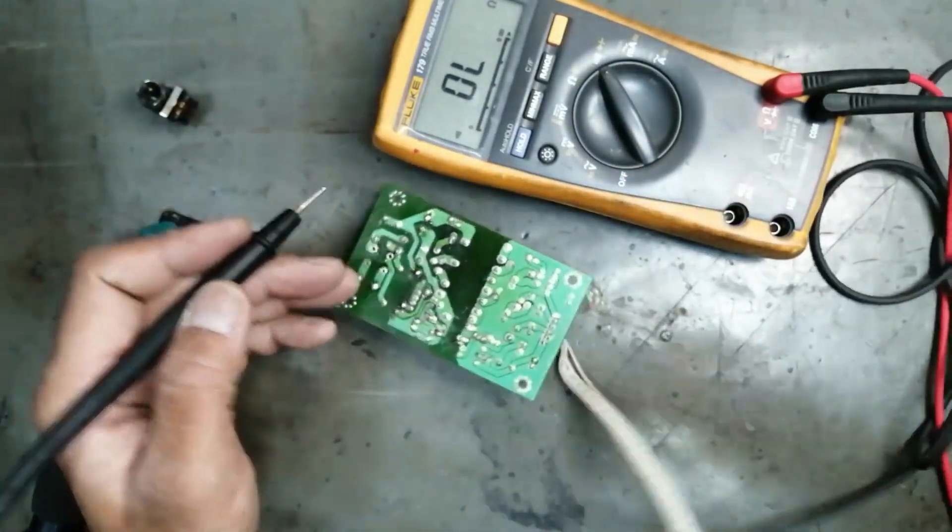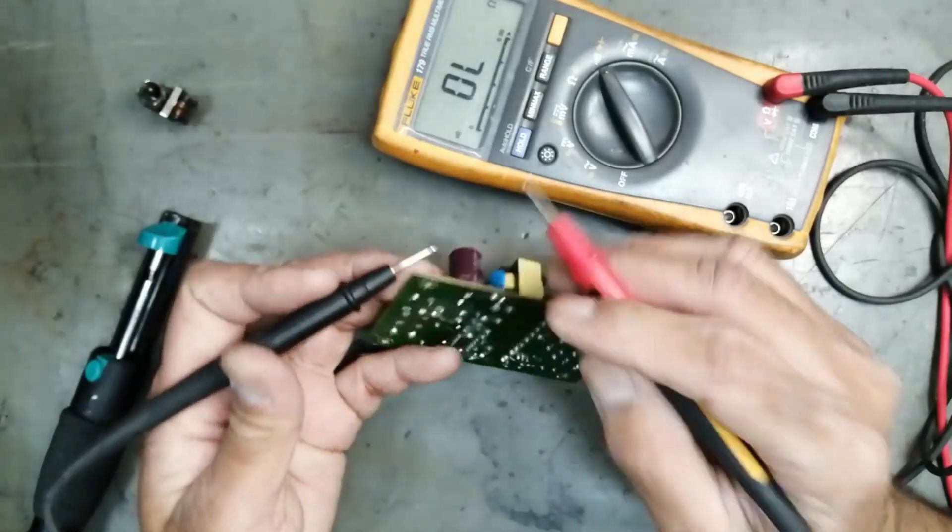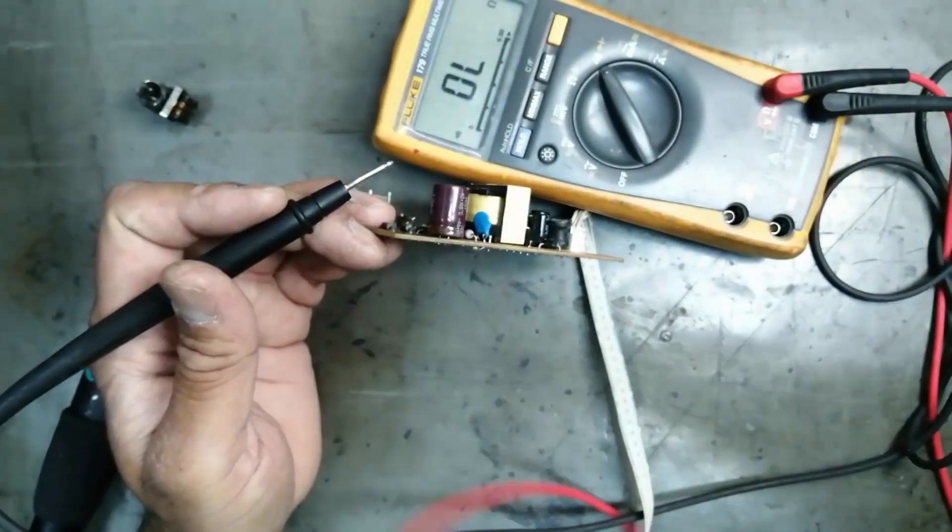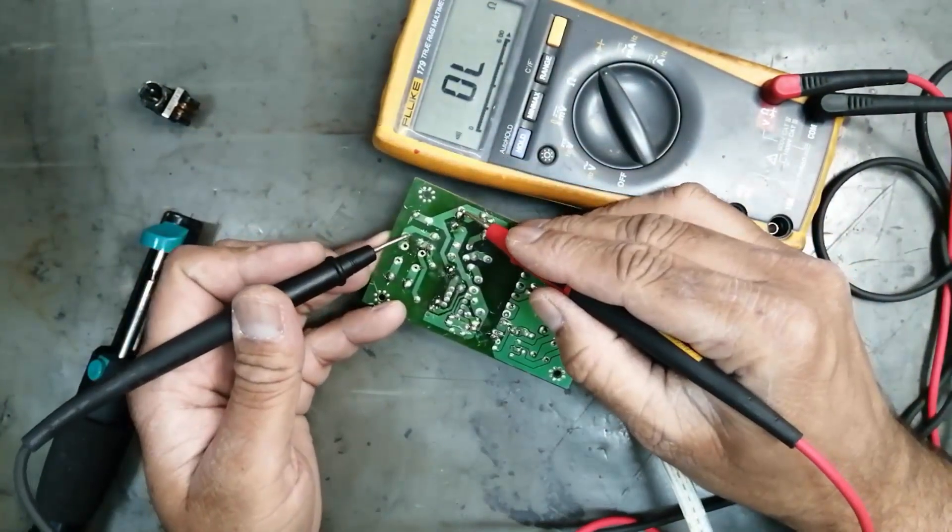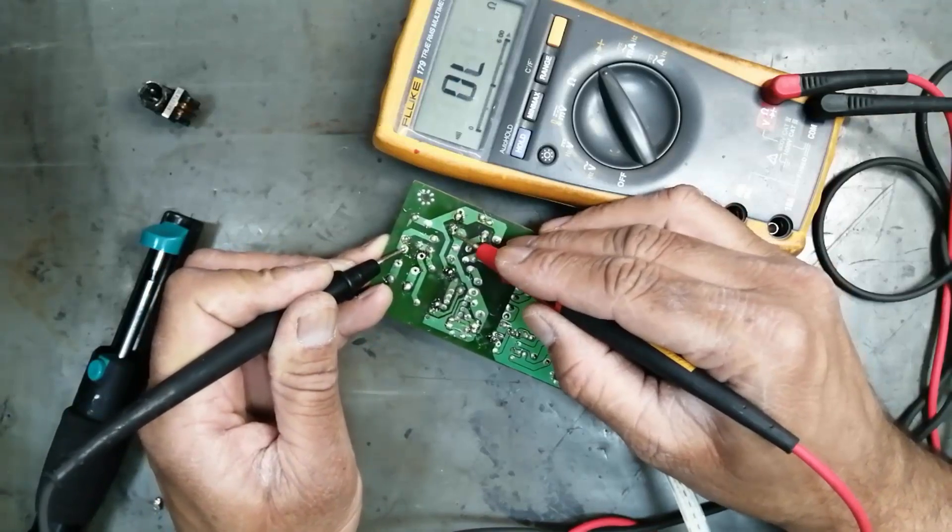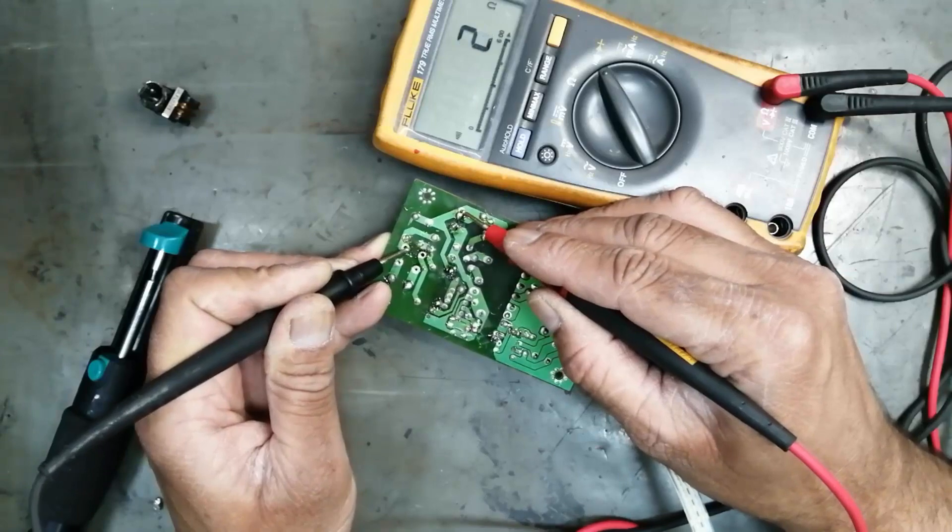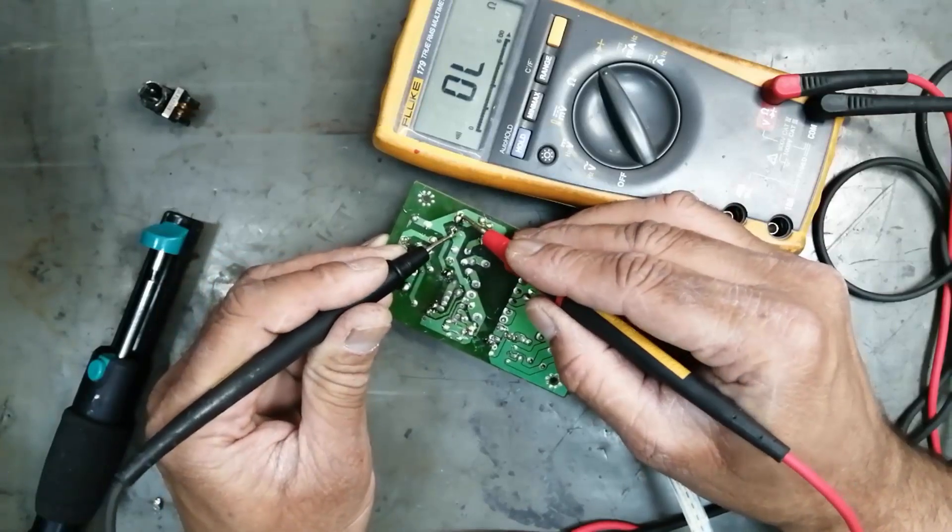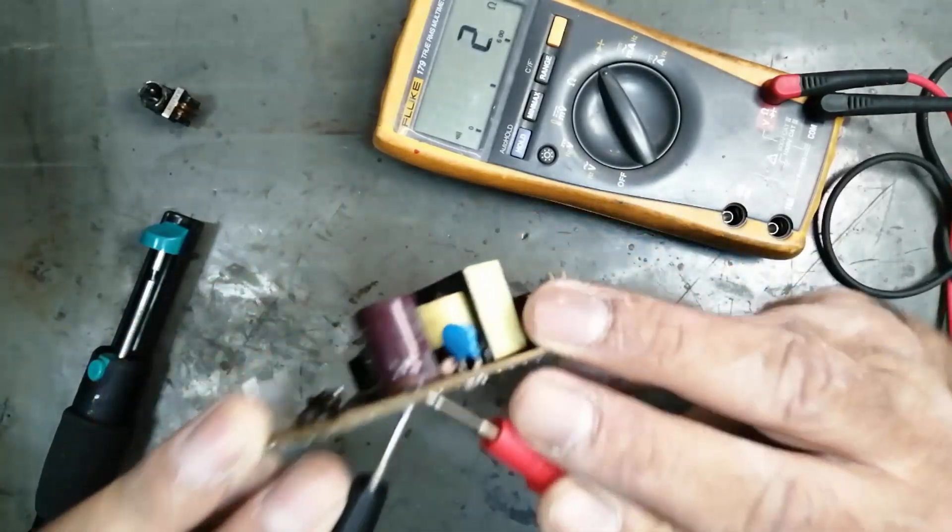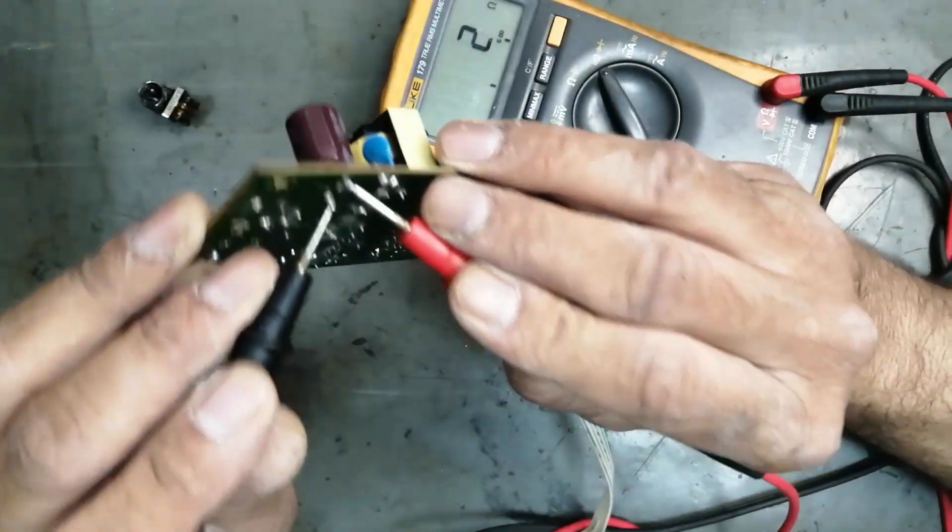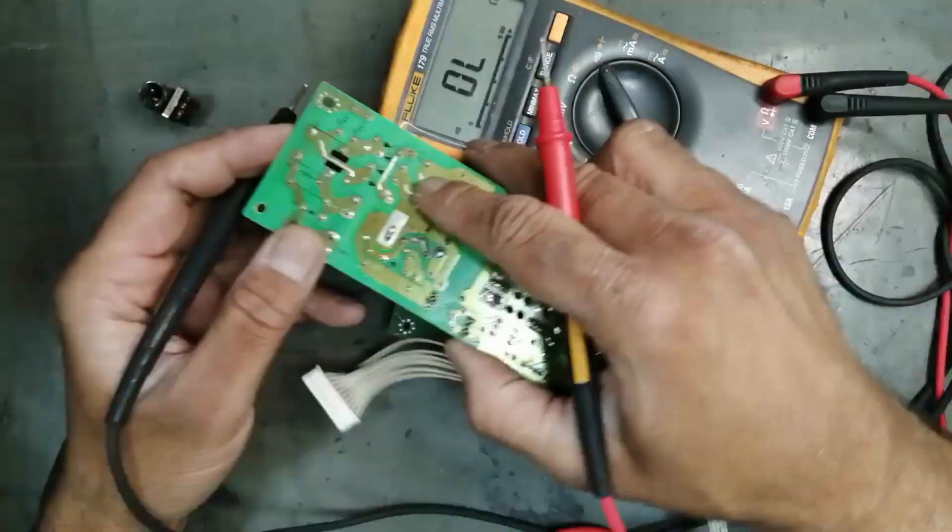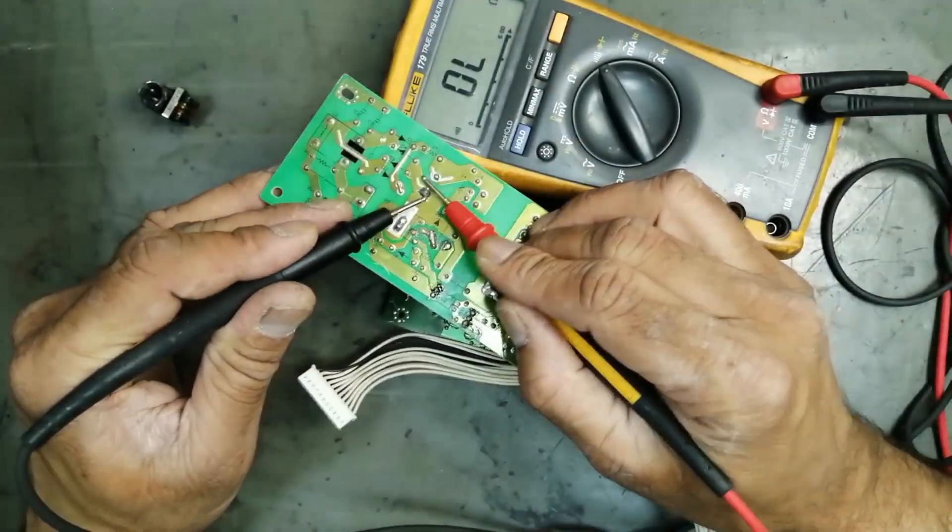Now connect the multimeter to one end of the capacitor. Oh, it is short. If we connect both leads of the multimeter to the input terminal of the capacitor, we can find a short. It should not be short. This power supply is good, so here is no short.